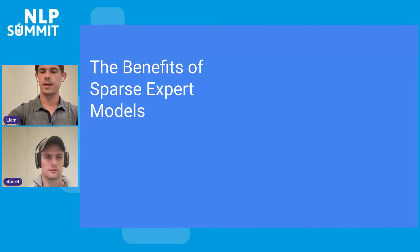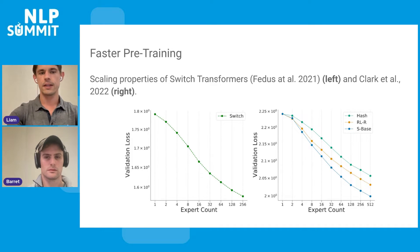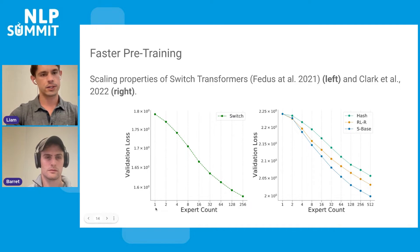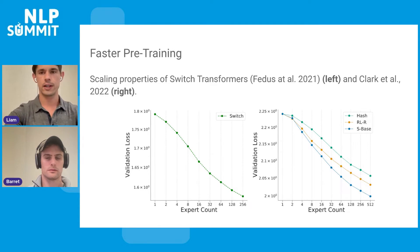The benefits of sparse expert models have been very widespread. First, the scaling properties are tremendous. Switch Transformer and Clark et al. in 2022 showed significant gains in validation loss — a measure of held-out model performance — versus the expert count. On the far left of both plots, this corresponds to a standard dense transformer. As the expert count is increased from 2 all the way up to 512, you see very consistent monotonic improvements in held-out performance. This translates into faster pre-training and speed savings.